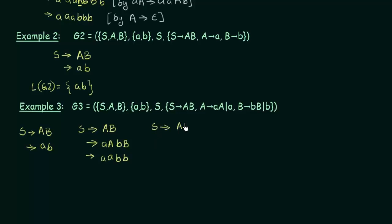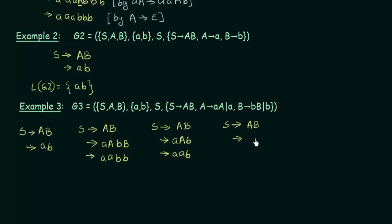Let us see another one. Starting with S gives AB, choosing A gives AA. Instead of A I write AA, and for B I choose small b directly. Then replacing one A with small a and keeping the other capital A, and applying A gives AA further, we can get aab. Another choice: starting again with S gives AB, taking A gives small a and B gives BB, then replacing one B with small b gives ab². So depending on the choice of production, you can generate many strings using grammar G3.